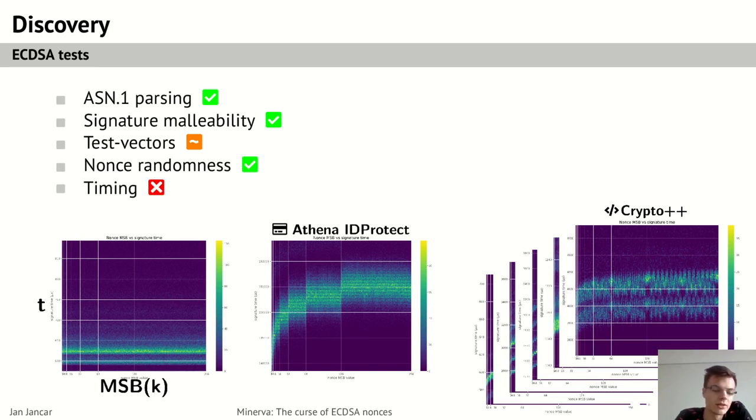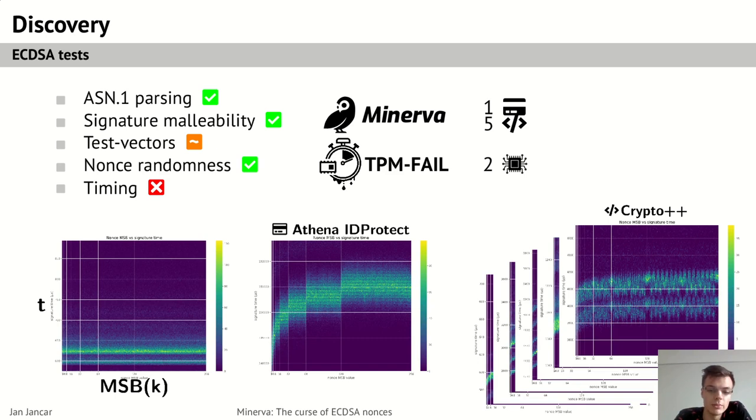So timing is clearly a fail test. In total, we found one leaking smart card and five libraries. Then we learned about the TPM fail paper, which found two implementations leaking the same way. And recently, a paper discovered this leak in the Mozilla NSS library. And who knows where else this leak might be.